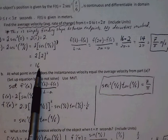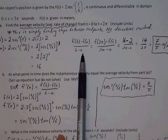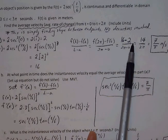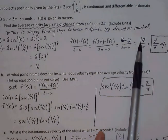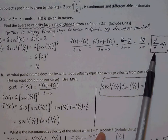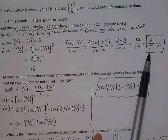So the average velocity is just going to be the change in y over change in x. So 16 minus 2 over 2 pi minus 0, 14 over 2 pi, 7 over pi, and this is velocity.